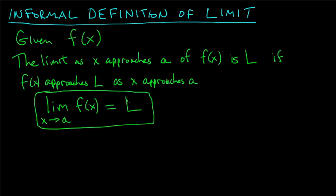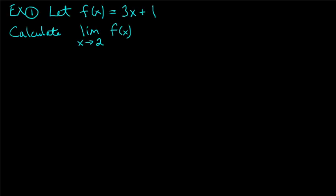It might not make a lot of sense yet, but let's clarify with examples. For our first example, let f(x) = 3x + 1. We want to calculate the limit as x approaches 2 of this function — that is, lim as x → 2 of (3x + 1). What does that equal?